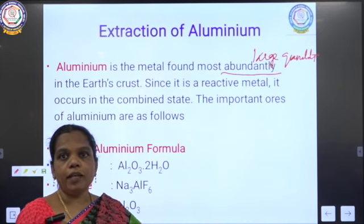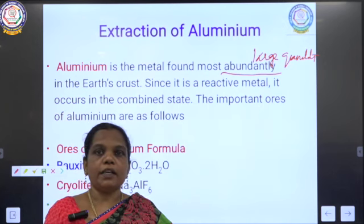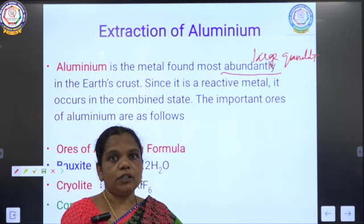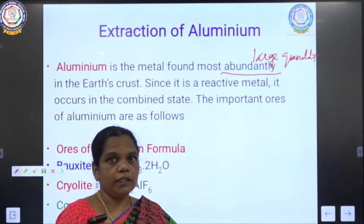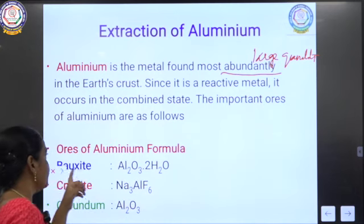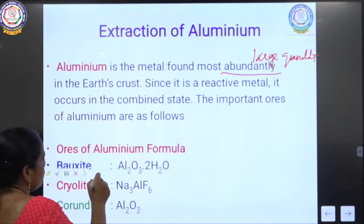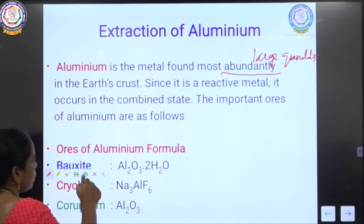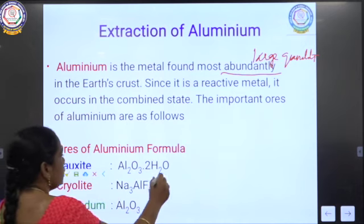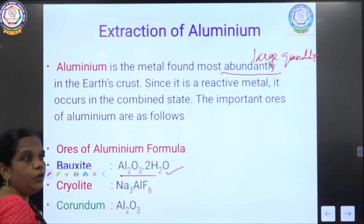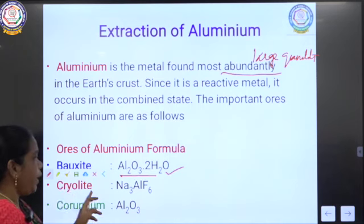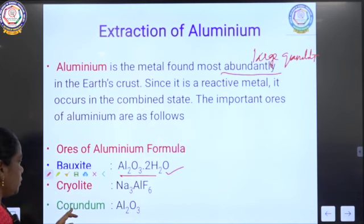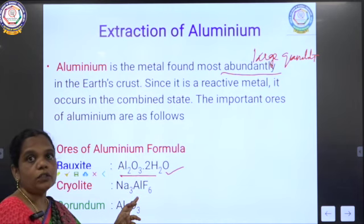All metals can be extracted from their ores only. Ore means the chemically combined state of the metal — all metals are found as ores in the earth's crust. The important ore of aluminium is bauxite (Al₂O₃·2H₂O), cryolite (Na₃AlF₆), and corundum (Al₂O₃). These are the chief ores of aluminium.